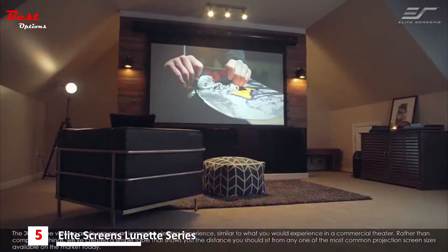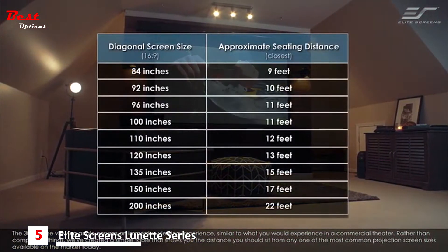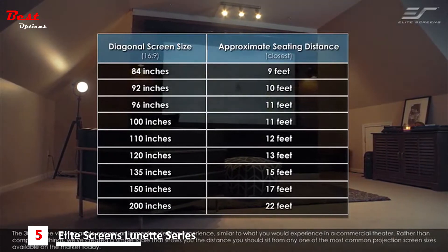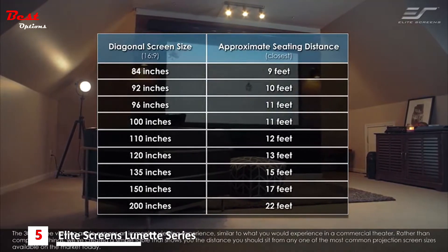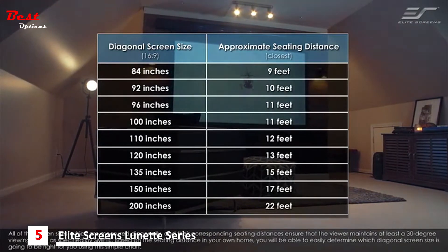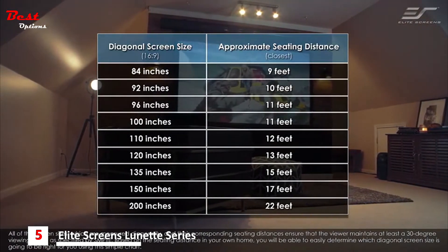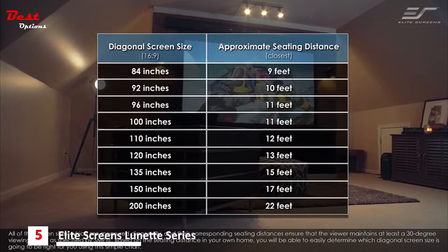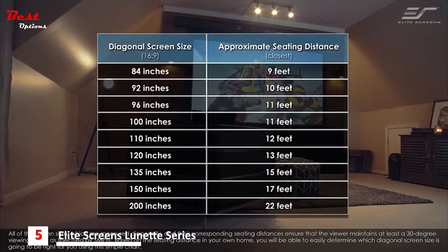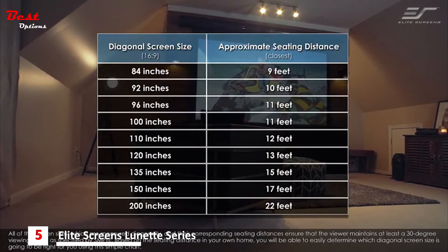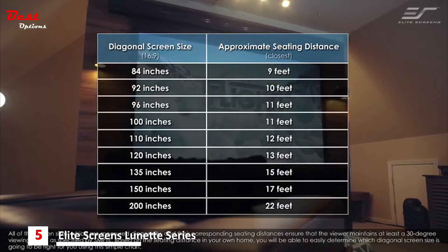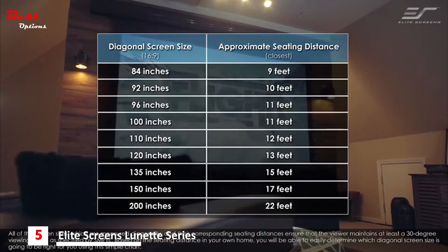Rather than complicate things, we've created a simple table that shows you the distance you should sit from any one of the most common projection screen sizes available on the market today. All of the screen sizes, which are measured diagonally, and their corresponding seating distances ensure that the viewer maintains at least a 30-degree viewing angle, as specified by SMPTE. Based on the seating distance in your own home, you'll be able to easily determine which diagonal screen size is right for you using this simple chart.